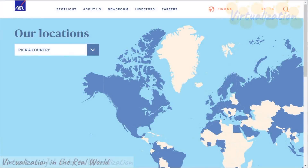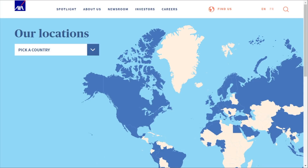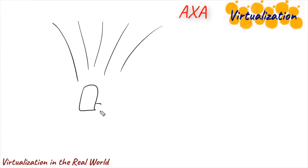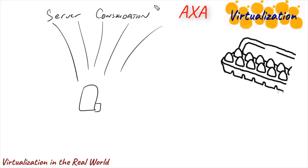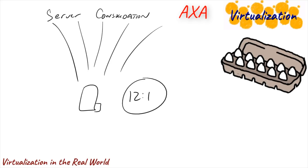Another fun example we could look at would be AXA Technologies. They're a global organization with millions of clients and hundreds of thousands of employees. One day they decided to take the plunge and go with virtualization. These folks had some serious server consolidation needs, but they were concerned that there would be a lack of reliability — all of your eggs in one basket. But by the time they were done, they had a 12 to 1 ratio of virtual machines to physical machines, and by putting all those virtual machines on one particular host, they ended up with a 30% improvement in utilization.